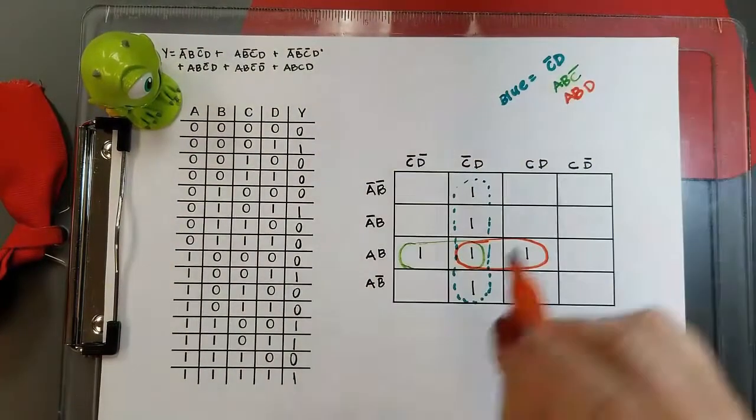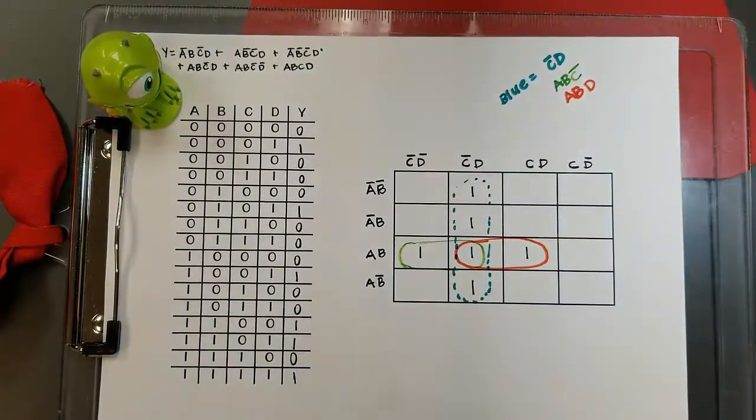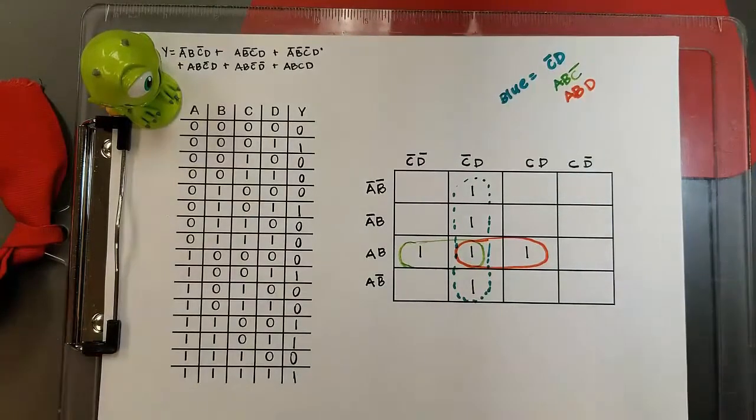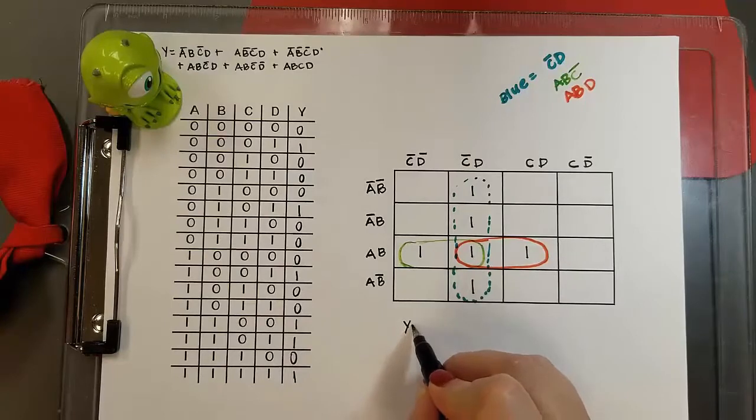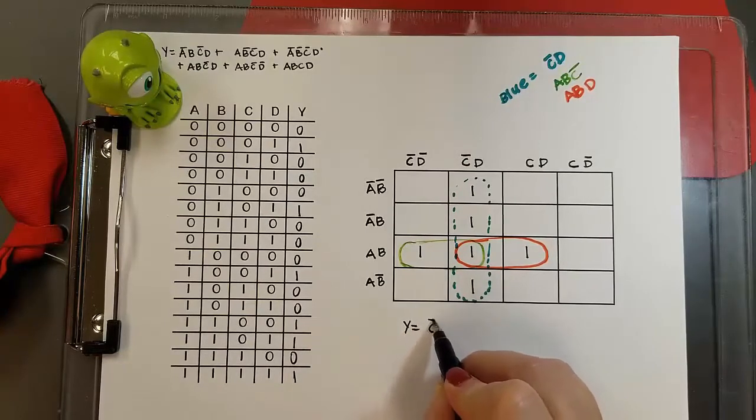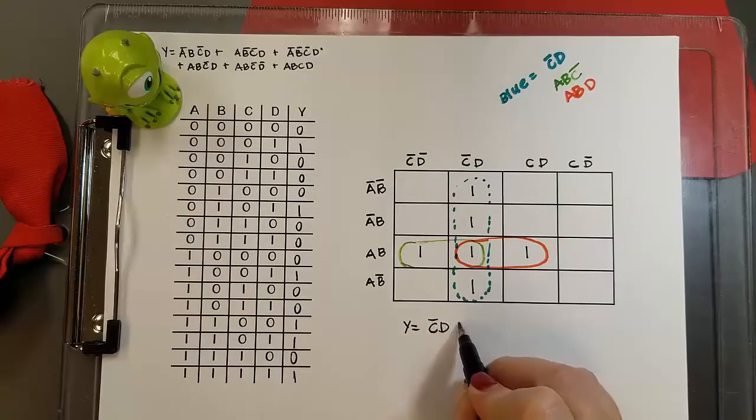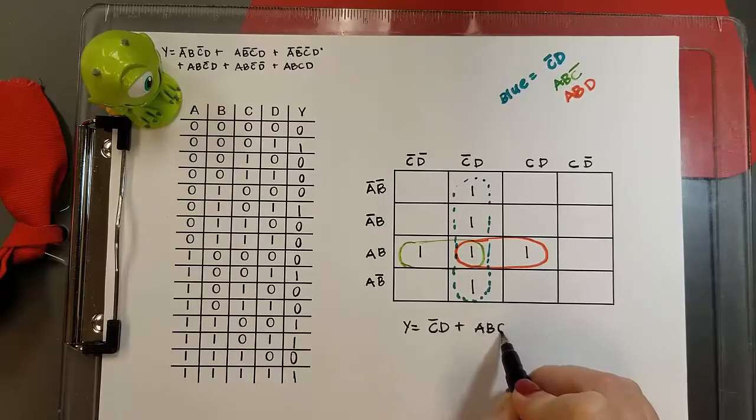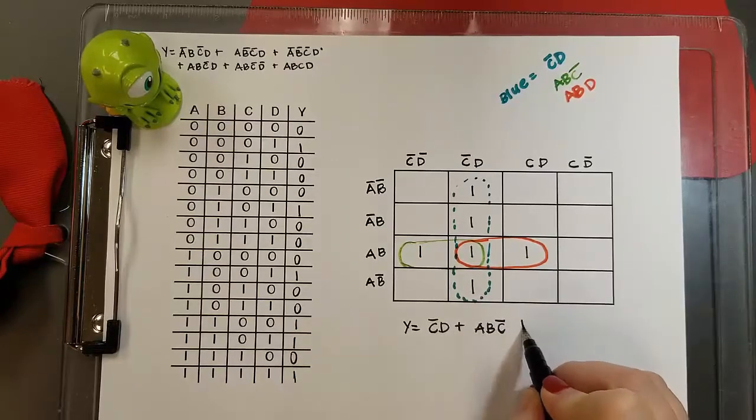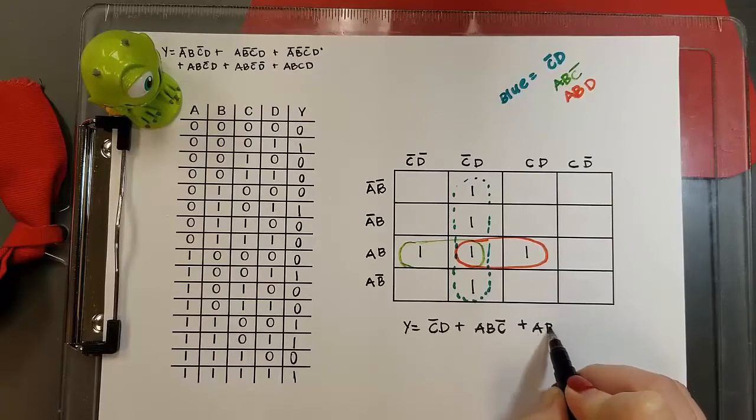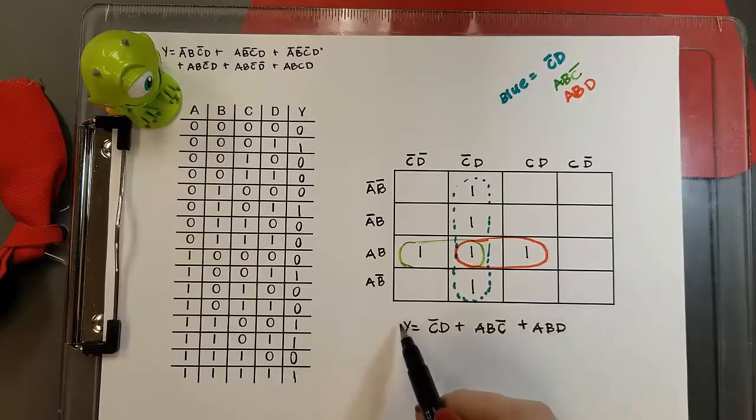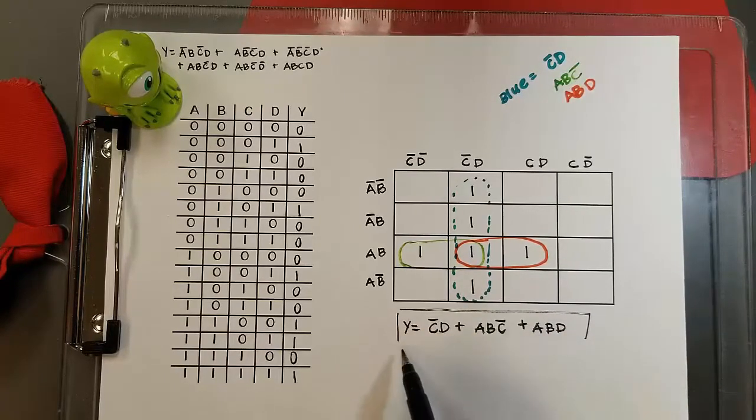So those are my terms. Now I can write the final form all together to have the simplified equation. Our simplified equation is Y equals not C D, or—I'm sorry—A B and not C, or A B D. And that's our final answer.